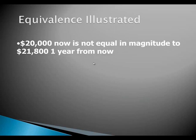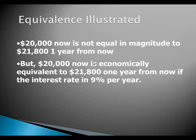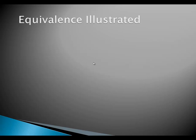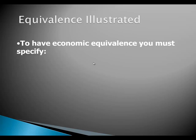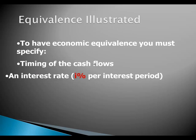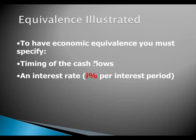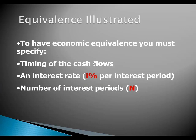$20,000 now is not equal in magnitude to $21,800 one year from now, but $20,000 now is economically equivalent to $21,800 one year from now if the interest rate is nine percent per year. We included interest rate and time — in this case one year. In summary, to have economic equivalence you must specify the timing for each cash flow, the interest rate i per interest period, and the number of interest periods n.